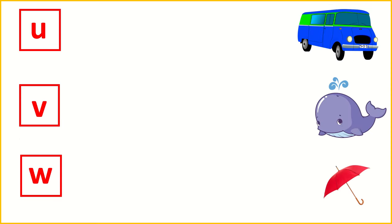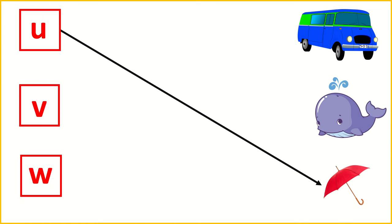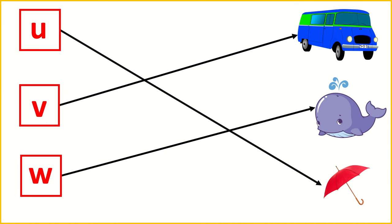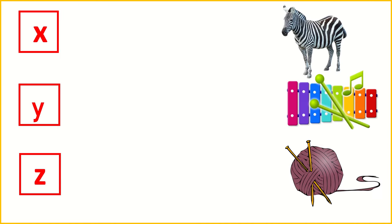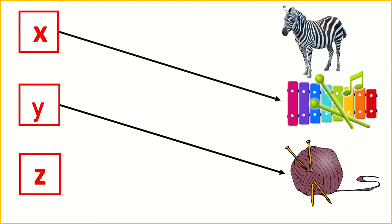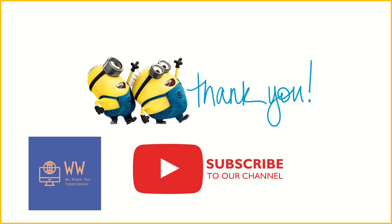U for Umbrella, V for Van, W for Whale. X for Xylophone, Y for Yarn, Z for Zebra.